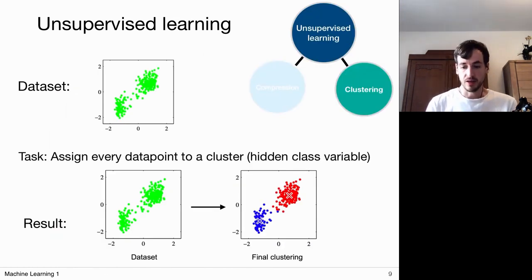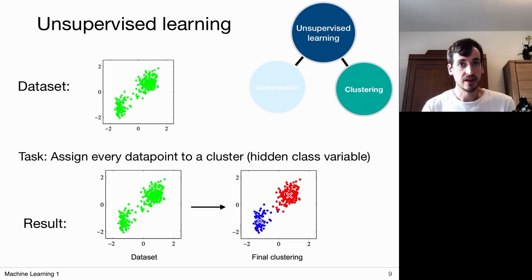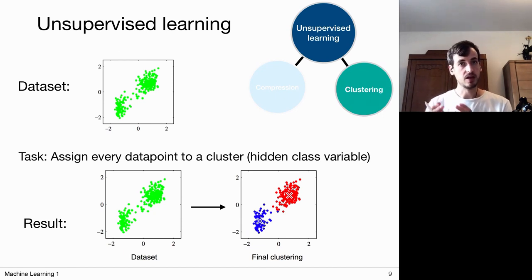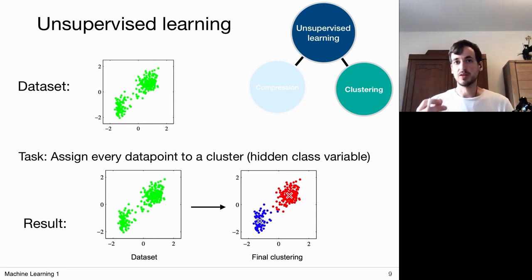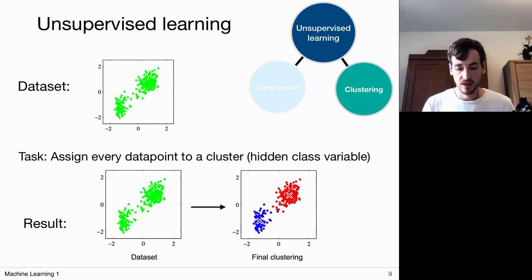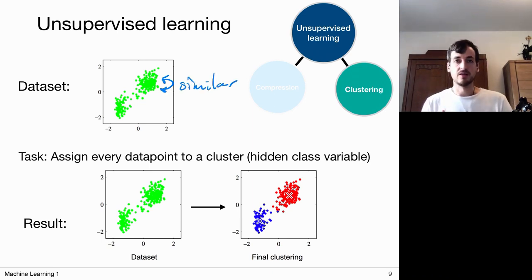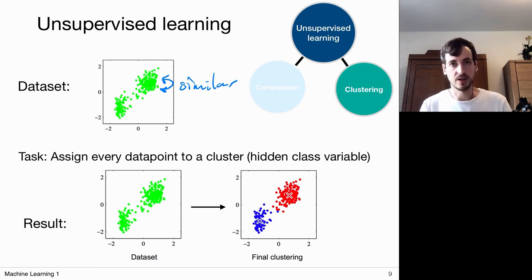A separate class of unsupervised learning methods is clustering. We already encountered that in the context of tumor analysis, where the goal was to identify clusters of tumor samples that are similar and use this information to adjust treatment plans. Such clustering methods are mostly based around the idea that points in the data are similar and we want to cluster them into classes. With clustering you can recover structure in the data.